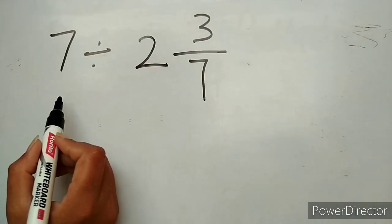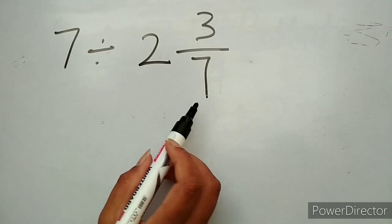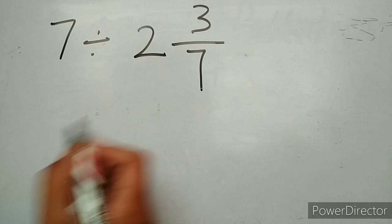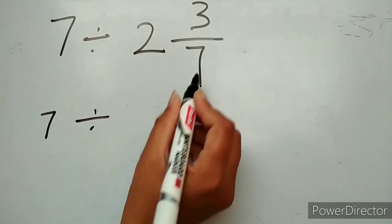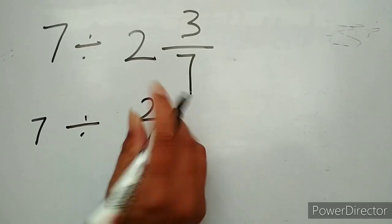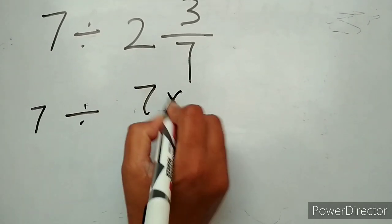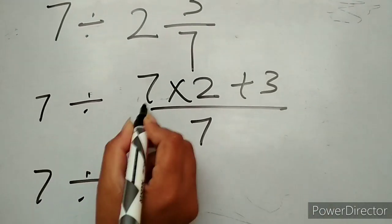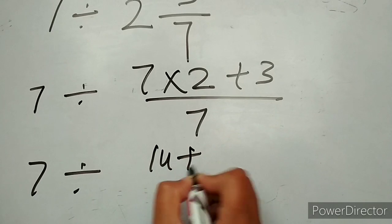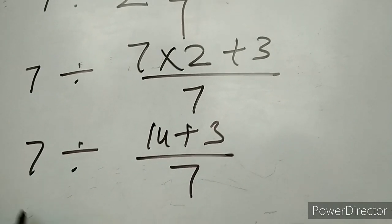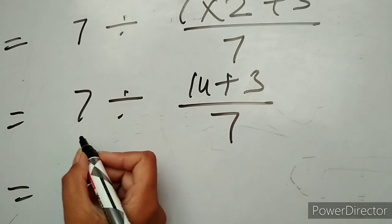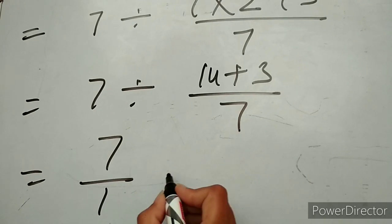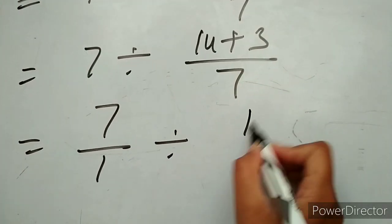Let's take one more example: 7 divided by 2 and 3 upon 7. Here 7 is the whole number and 2 and 3 upon 7 is a mixed fraction. First we simplify the mixed fraction: the denominator 7 multiplied by the whole number 2 gives 14, plus numerator 3 over 7. 7 is a whole number so we convert it into a fraction: 7 upon 1 divided by 14 plus 3, which gives 17 upon 7.